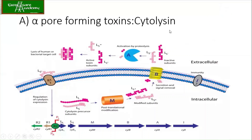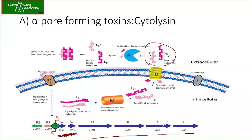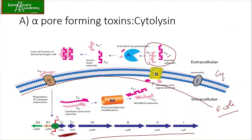Now, for alpha pore-forming toxin cytolysin — first you have got the inactive subunits large (L) and small (S). The genes getting expressed here are, for example, M, B, A, I. This is the E. coli bacteria membrane. E. coli understands that there is a human target cell nearby and needs to produce cytolysin. Cytolysin is composed of two subunits — large and small. R is for regulation — required or not required.